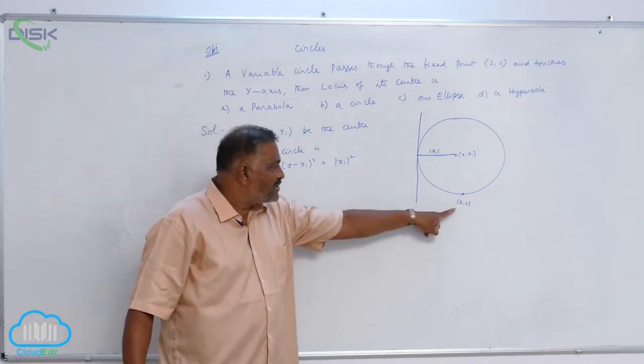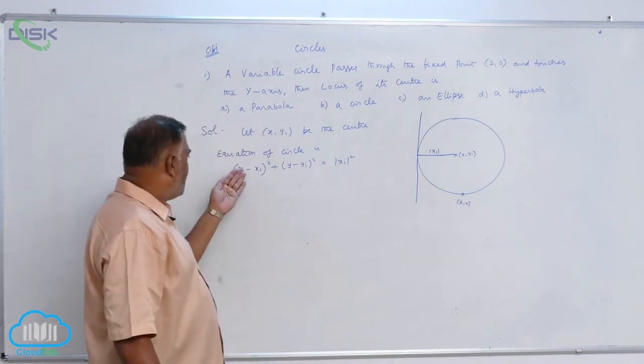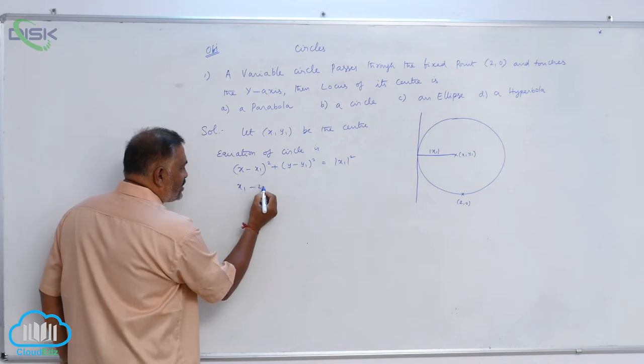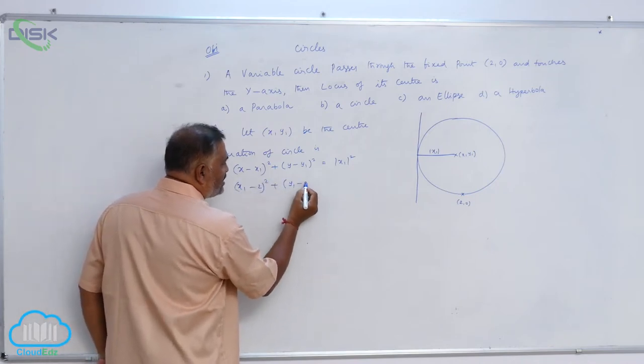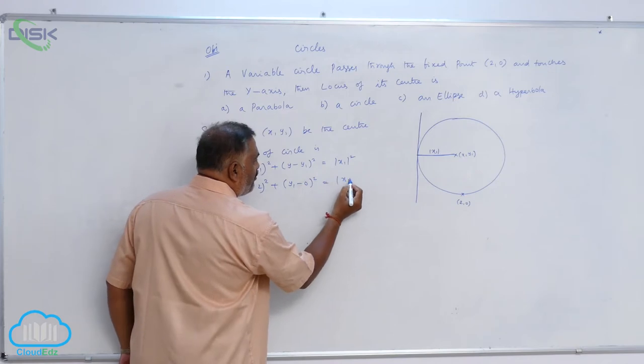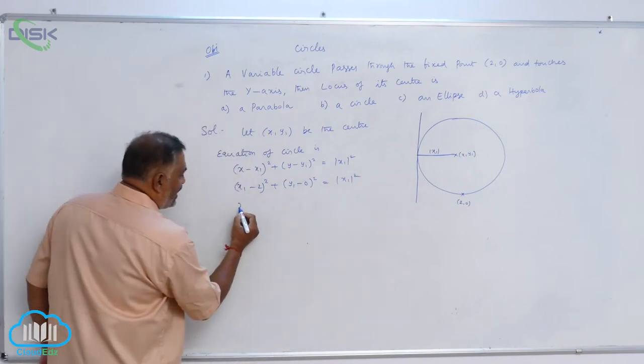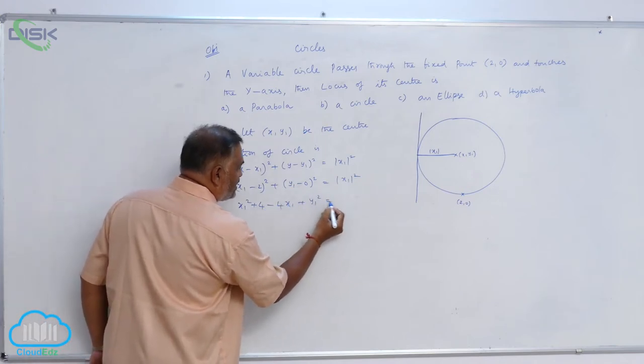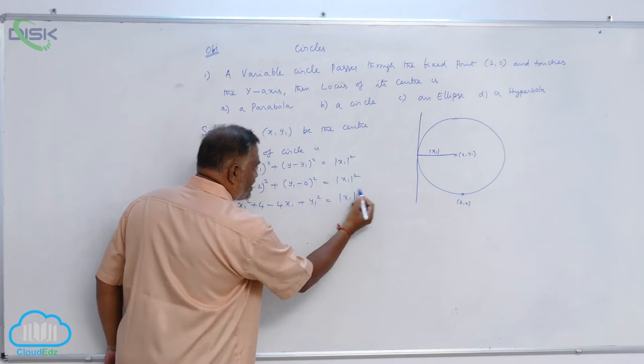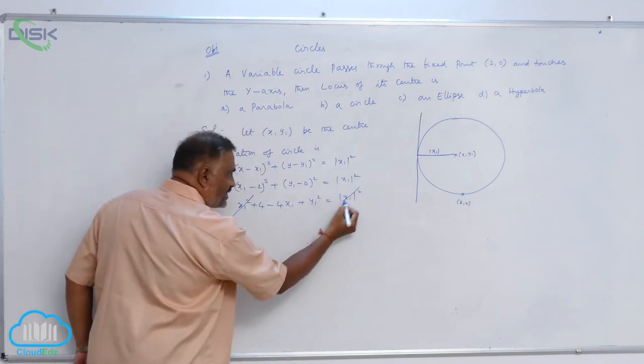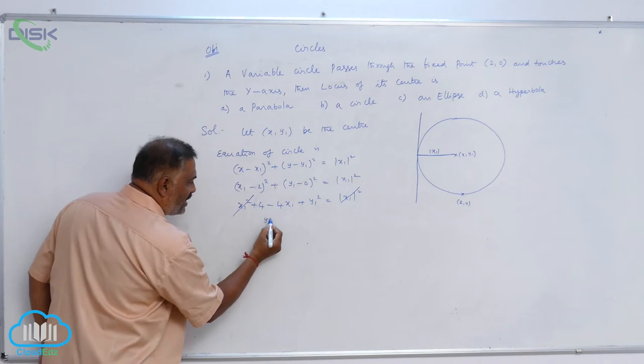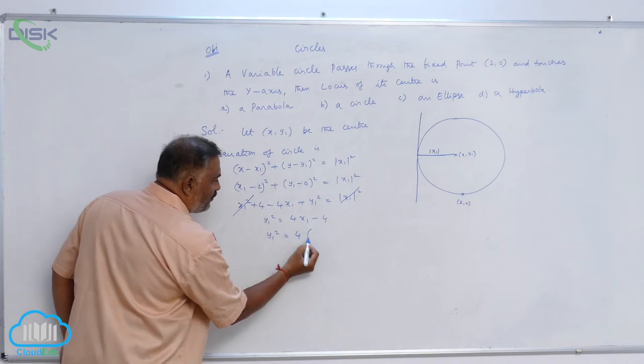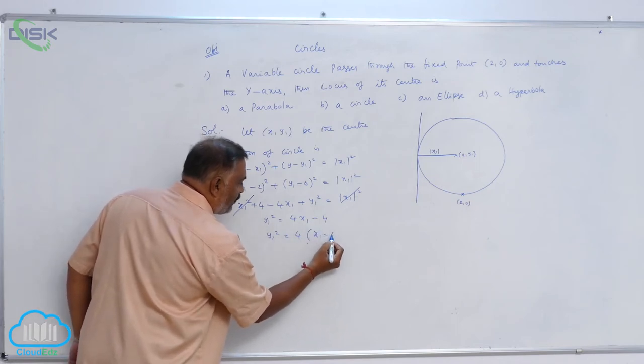Now since circle passes through (2, 0), in place of (x, y) you can substitute (2, 0). So (x1 - 2)² + y1² = |x1|². So x1² + 4 - 4x1 + y1² = |x1|². So x1² gets cancelled. y1² = 4x1 - 4, y1² = 4(x1 - 1).